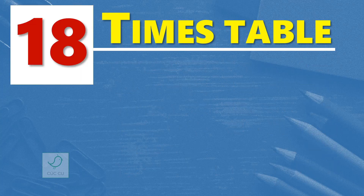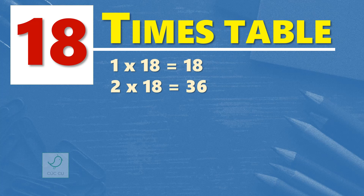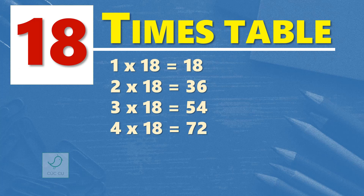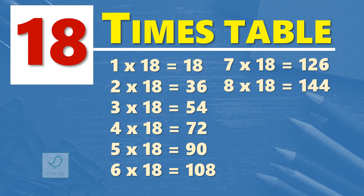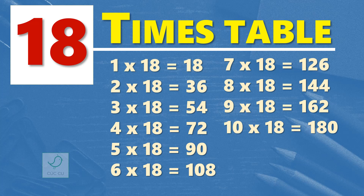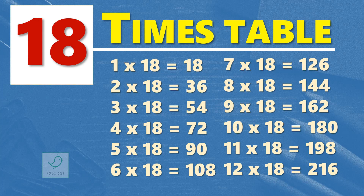18 times table. 1 times 18 is 18. 2 times 18 are 36. 3 times 18 are 54. 4 times 18 are 72. 5 times 18 are 90. 6 times 18 are 108. 7 times 18 are 126. 8 times 18 are 144. 9 times 18 are 162. 10 times 18 are 180. 11 times 18 are 198. 12 times 18 are 216.